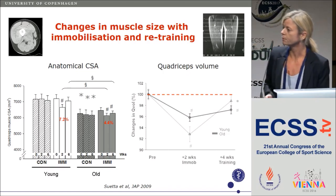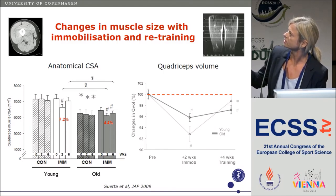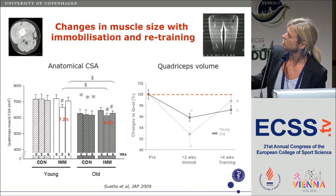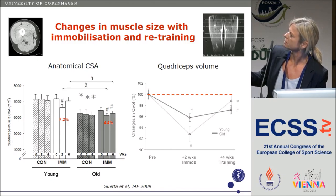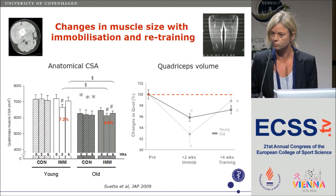When we looked at muscle mass, we assessed both anatomical cross-sectional area with CT and MR scans, and also assessed all muscle volume. What we saw was quite interesting: older individuals actually lost almost double the muscle mass compared to the young individuals. Young individuals were able to regain their muscle mass after four weeks of resistance training, whereas despite three times per week for four weeks of resistance training, older individuals were not able to regain their loss of muscle mass.